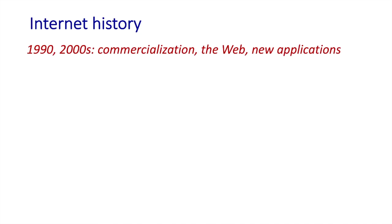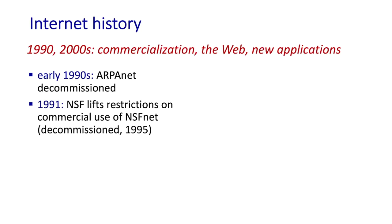Now we're at the 1990s. The early 1990s saw a number of events that symbolized the continued evolution of the network and the soon-to-arrive commercialization of the internet. ARPANET, the progenitor of the internet, was decommissioned in 1991. NSFnet lifted its restrictions on the use of the network for commercial purposes — I can still remember the day I received my first email advertisement. NSFnet was decommissioned in 1995, and new businesses — internet service providers like the tier-one providers we discussed earlier — sprung up to carry backbone traffic.